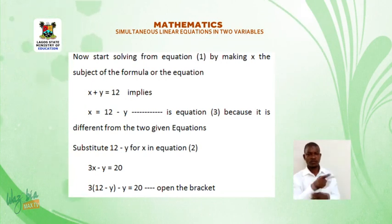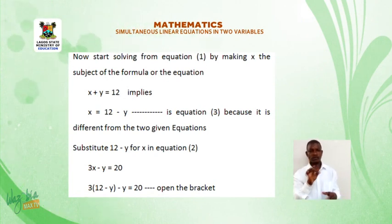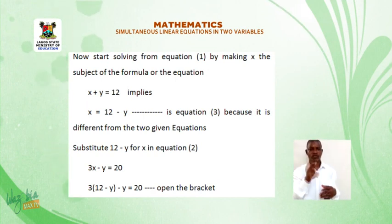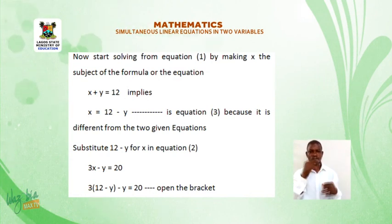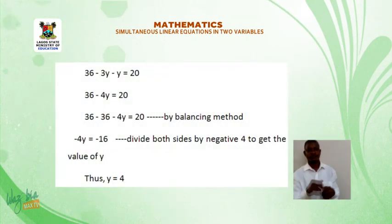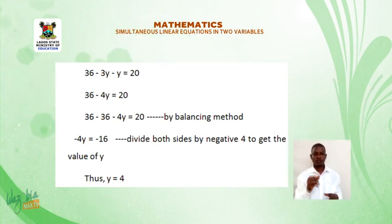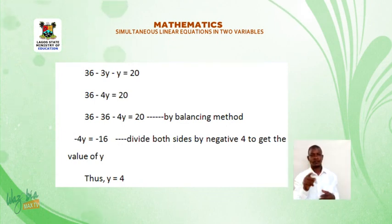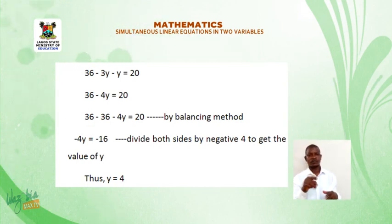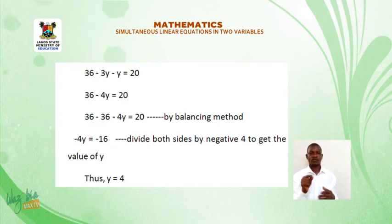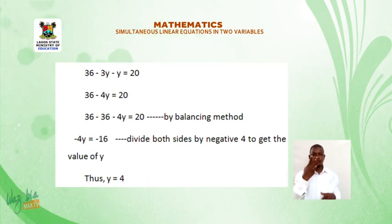Substitute 12 minus y for x in equation 2. 3x minus y is equal to 20 becomes 3(12 minus y) minus y is equal to 20. Open the brackets: 36 minus 3y minus y is equal to 20. Therefore, 36 minus 4y is equal to 20.